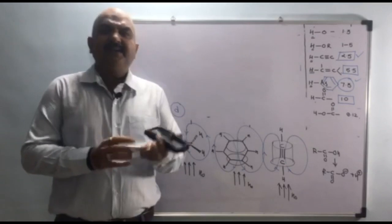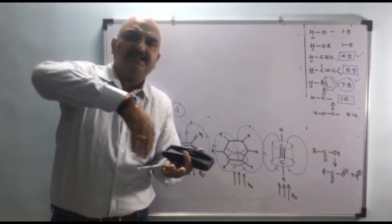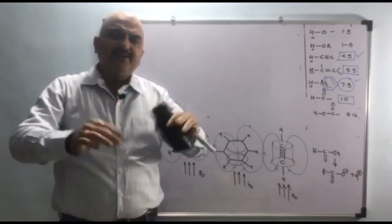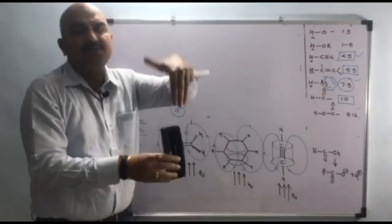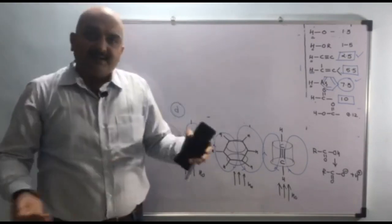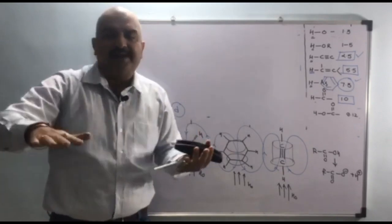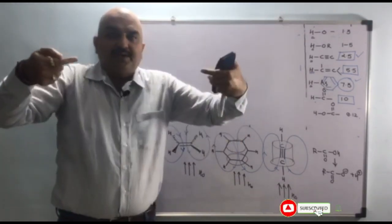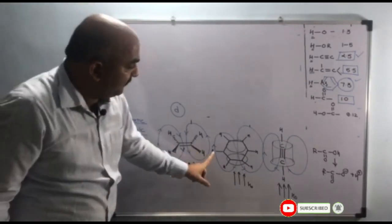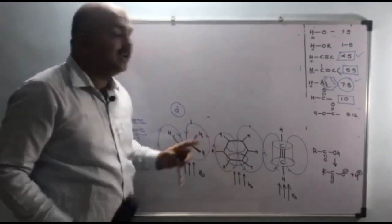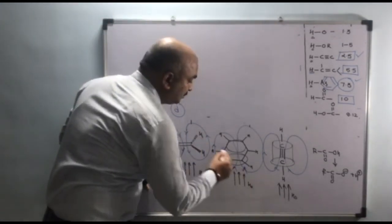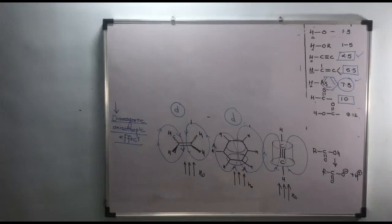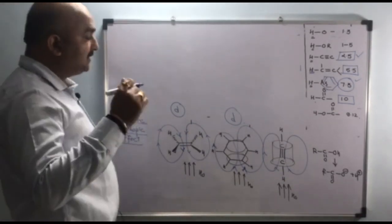For the benzene ring, it orients such that electron density is present above and below the ring. The electrons revolve around and the induced magnetic field comes to the sides (in the plane of the ring), where it adds to the external magnetic field — causing deshielding of the in-plane protons. The sigma electrons orient in the same direction as the external magnetic field, which again leads to deshielding.